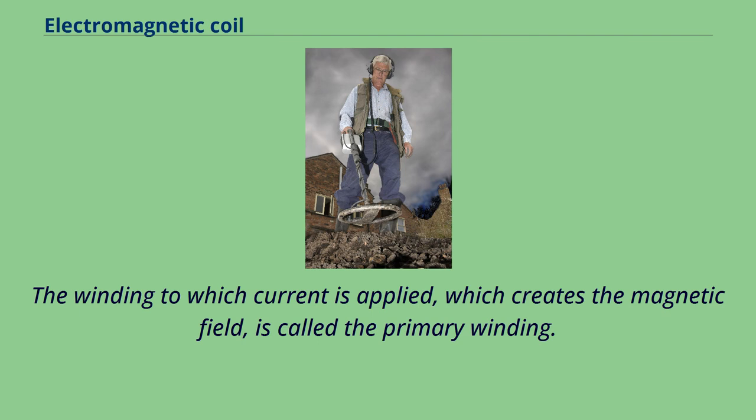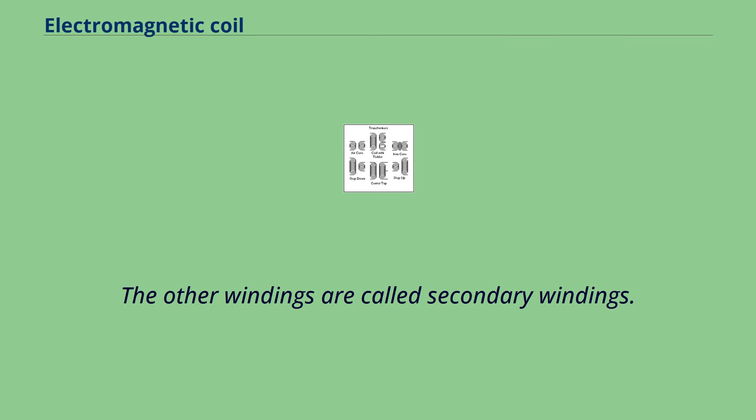The winding to which current is applied, which creates the magnetic field, is called the primary winding. The other windings are called secondary windings.